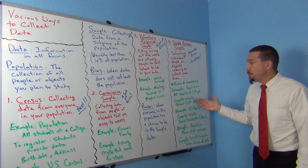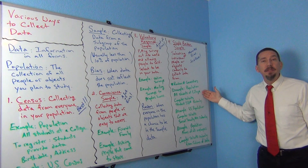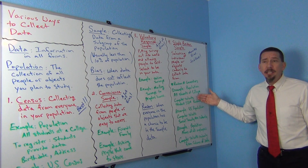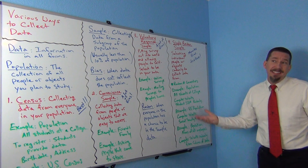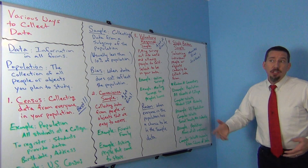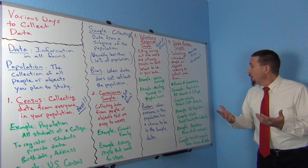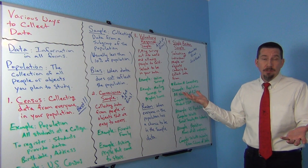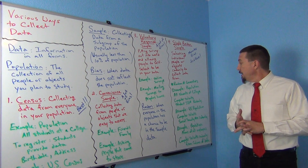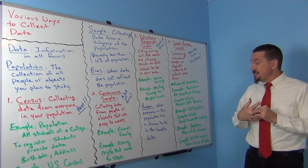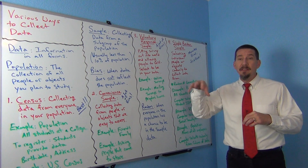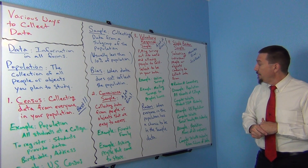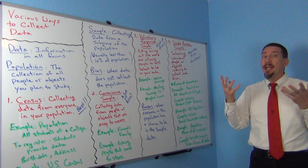Suppose we have the population of all the students at my college. Every student at my college has a student ID number. So what I could do is have a computer randomly select student ID numbers. If a computer randomly selects student ID numbers, every possible student ID number is available, so it will be a random sample.